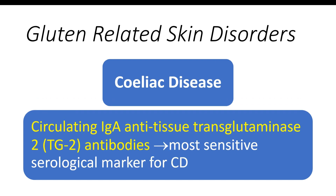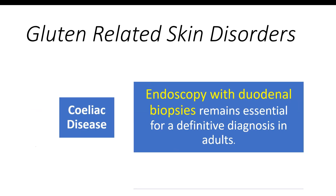Diagnosis of celiac disease is based on a combination of genetic factors, clinical presentation, serological tests, and histological analysis. Detection of circulating IgA anti-tissue transglutaminase (TG2) antibodies is the most sensitive serological marker. In seronegative patients with IgA deficiency, testing for deamidated gliadin peptide IgG antibodies can be useful. Endoscopic biopsy reveals characteristic histological features such as lymphocytic infiltration, crypt hyperplasia, and varying degrees of villous atrophy. While biopsy-free diagnosis is permitted in children under specific conditions, endoscopy and duodenal biopsies remain essential for definitive diagnosis in adults.